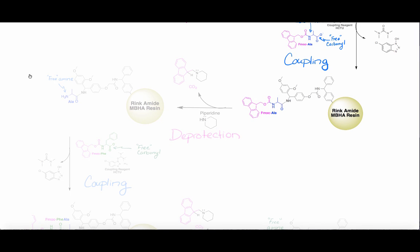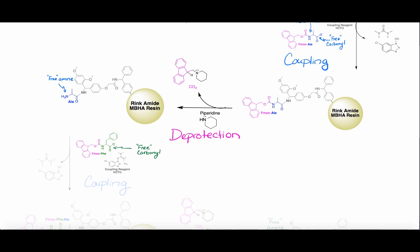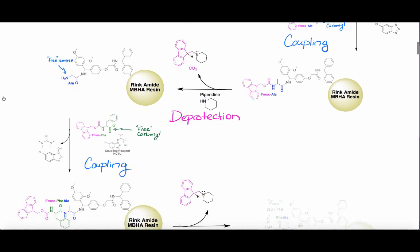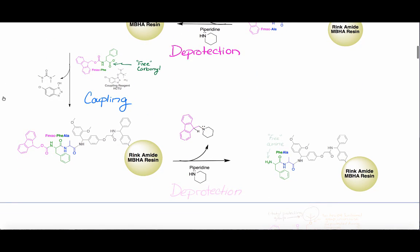To add a second amino acid, these steps are repeated. First, the Fmoc group is removed through deprotection with purpuridine, leaving the free amine available for the next coupling. Then, a new Fmoc-protected amino acid is coupled using HCTU as a coupling reagent. The free amine of the growing chain will react with the free carbonyl of the new amino acid to form a new peptide bond. Now we have a dipeptide — two amino acids linked in a chain.